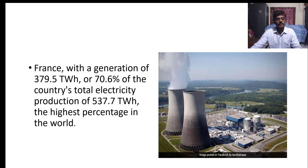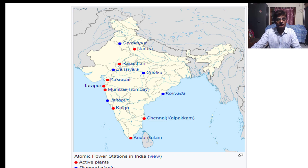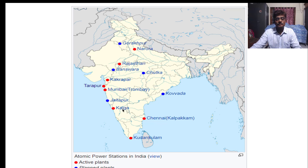India's nuclear power plants are located at: Trombay and Tarapur in Maharashtra; Rajasthan; Narora; and planned plants at Kovvada, Jaitapur, Banswara, and Gorakhpur.